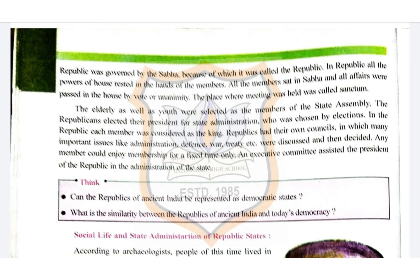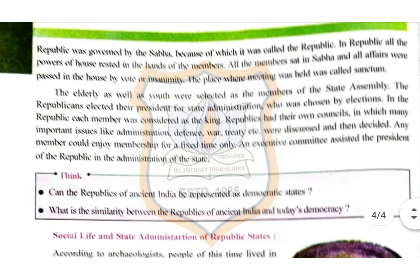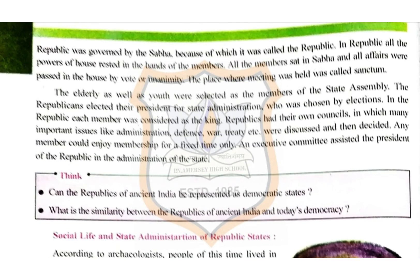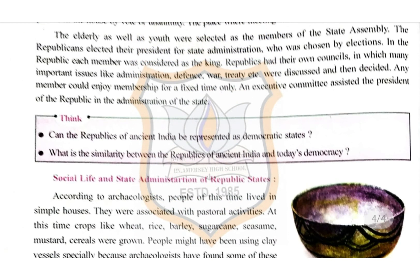The place where meetings were held was called the Santhagara. Both the elderly and youth were selected as members of the state assembly. The republicans elected their president for state administration, who was chosen by election. In the republic, each member was considered as the king.